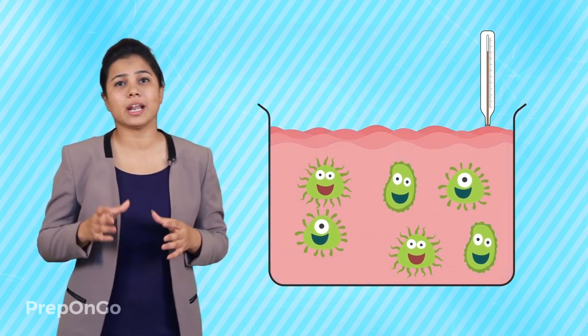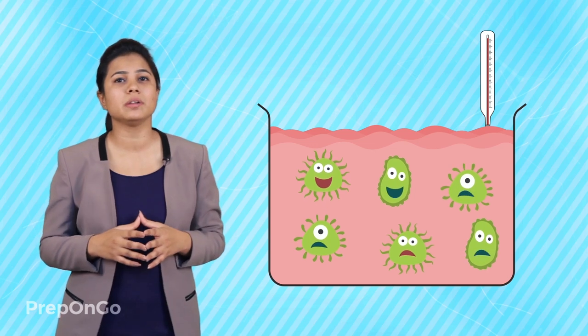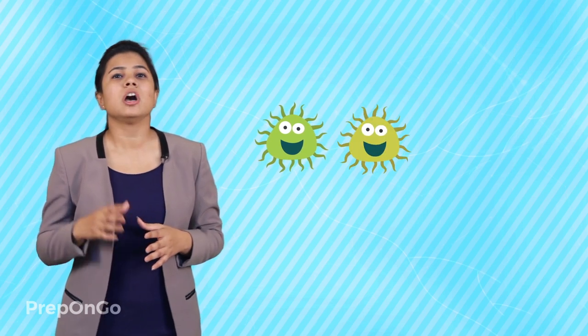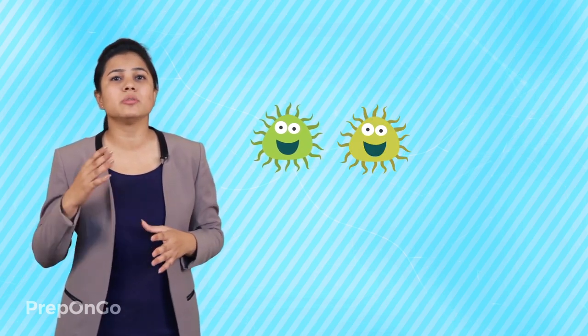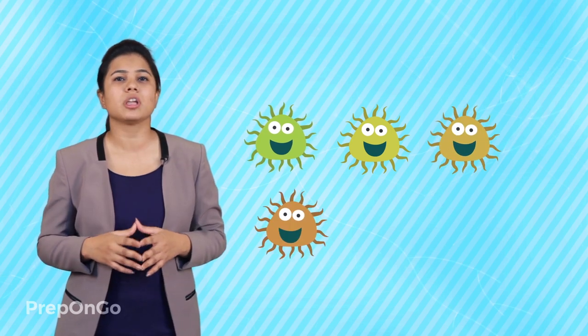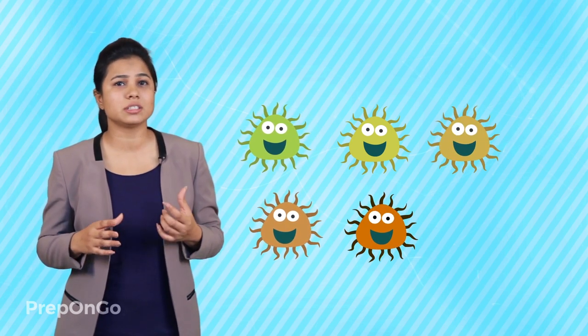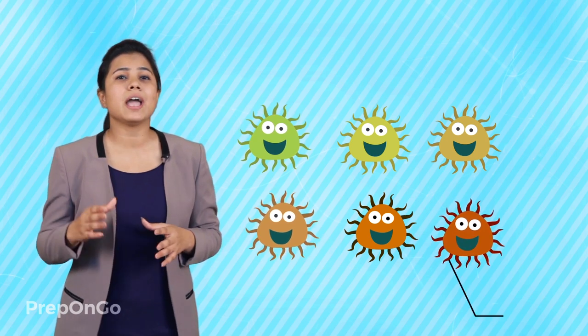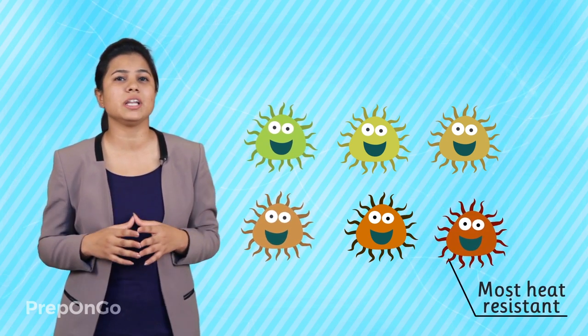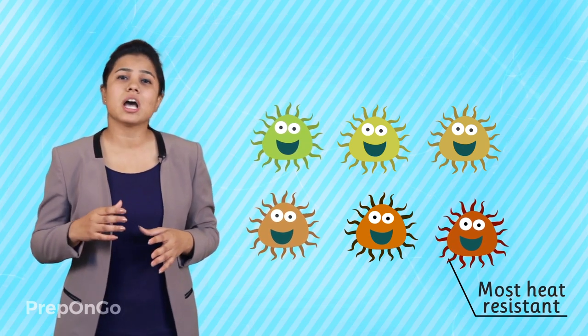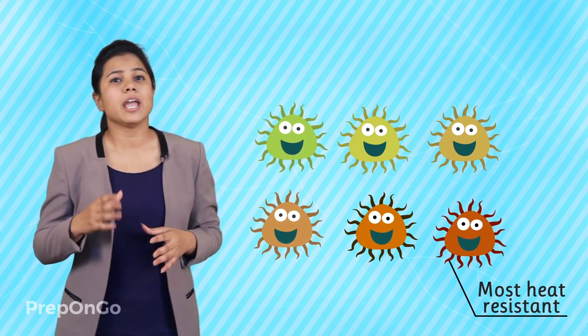When the temperature of the water body rises due to global warming, the environmental conditions become harsh. So the bacteria living in that region will reproduce offspring which are more heat resistant than the previous ones. Over the generations, the trait of heat resistance will become strong and the species will tolerate higher temperatures and thus survive. So in this video, we have seen briefly what is heredity and evolution. In our later videos, we will be seeing both concepts in a detailed way.